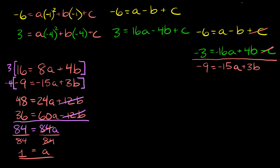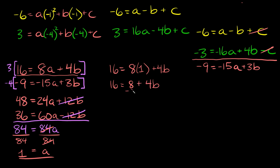Now we plug a = 1 into one of our two-variable equations: 16 = 8(1) + 4b, so 16 = 8 + 4b. Subtracting 8 from both sides gives 8 = 4b, so b = 2.